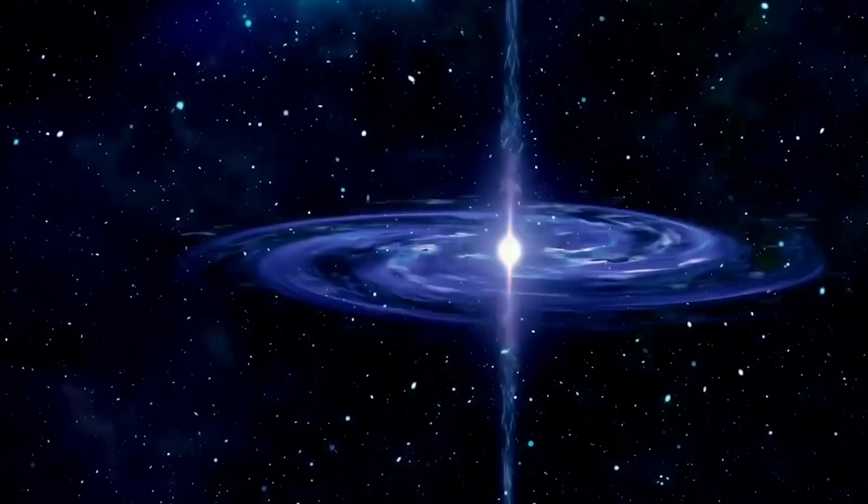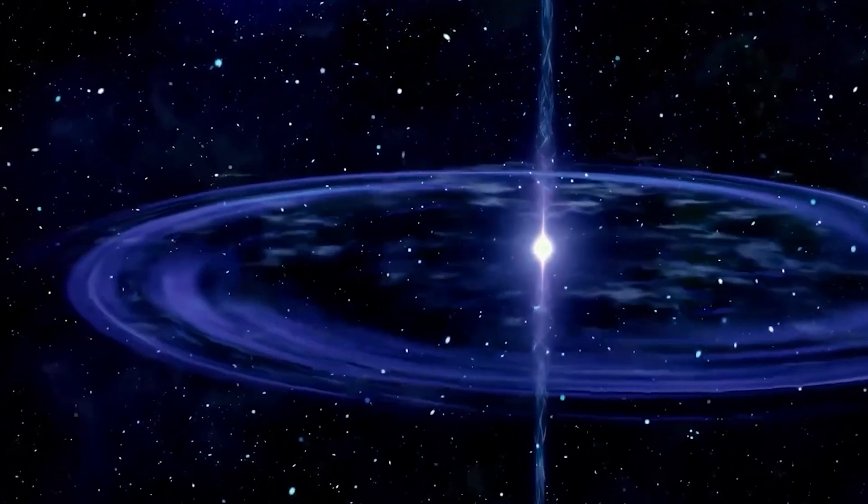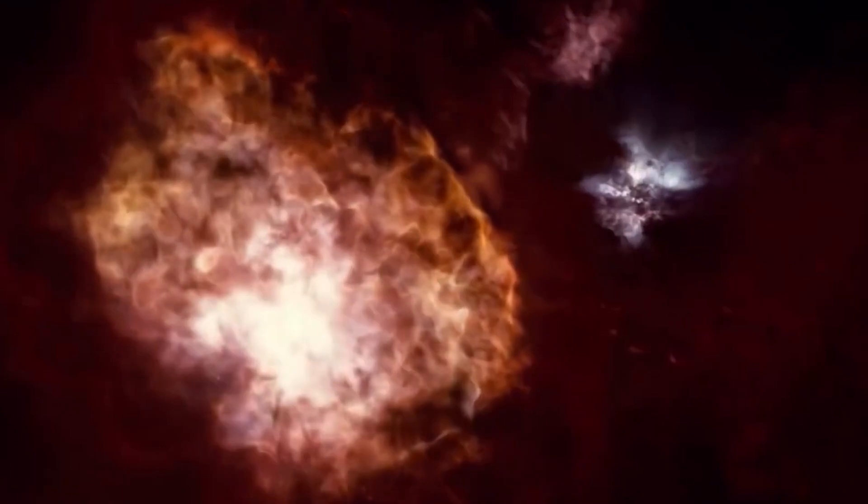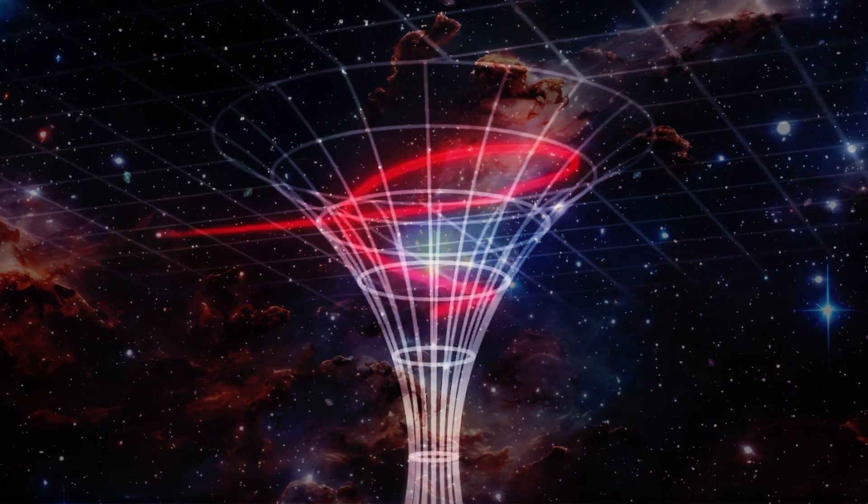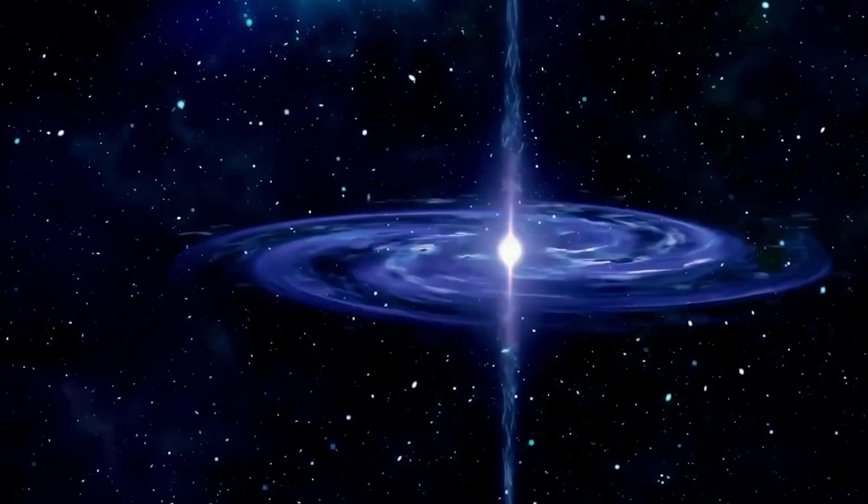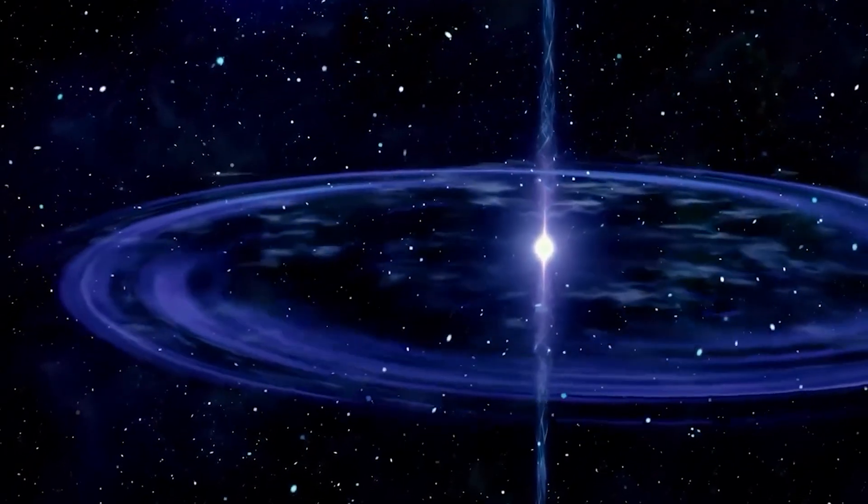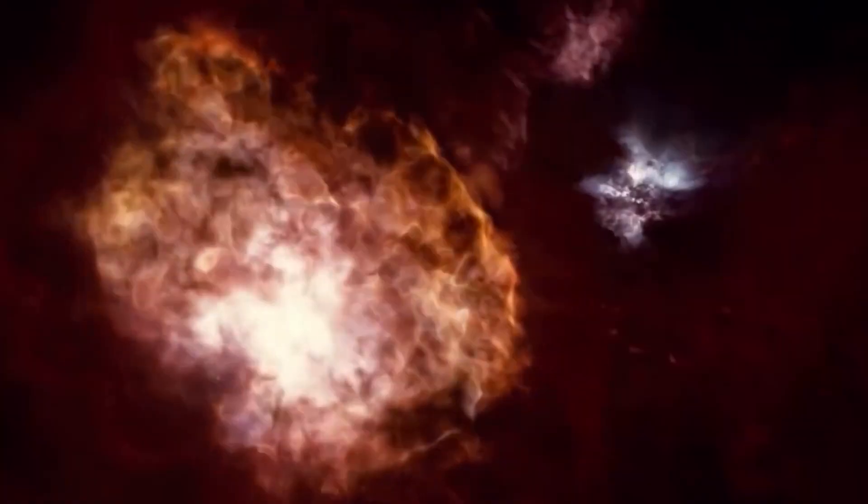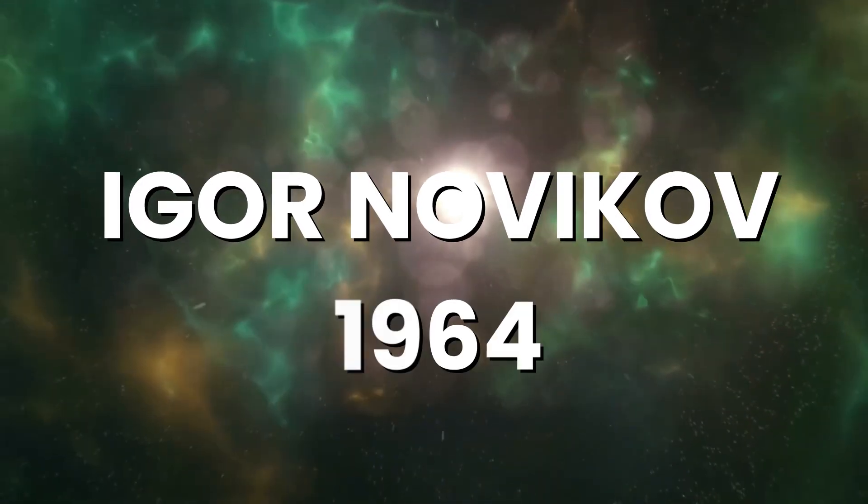Just as white is the inverse of black, a white hole is the inverse of a black hole in every sense of the word. Just as light cannot escape a black hole, light cannot enter a white hole. Light can only be emitted from it. This means that a white hole will be very bright and white. The term white hole was first coined by Russian theoretical physicist Igor Novikov in 1964.